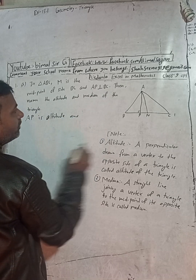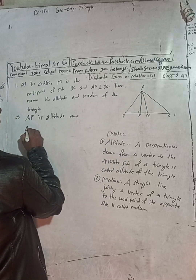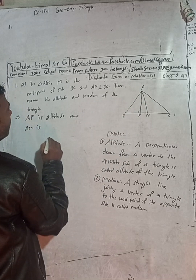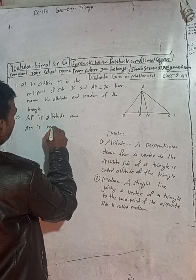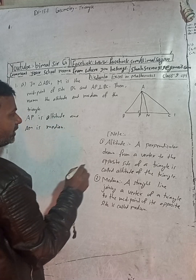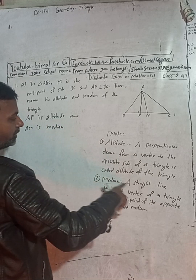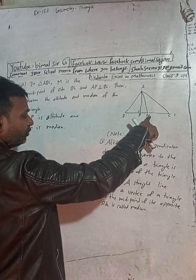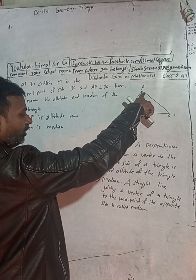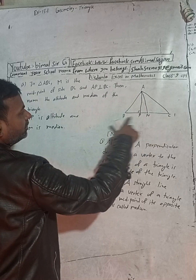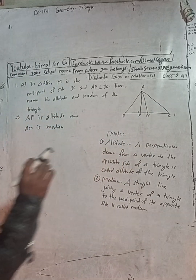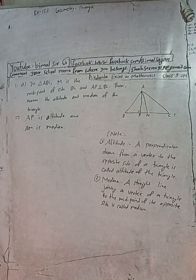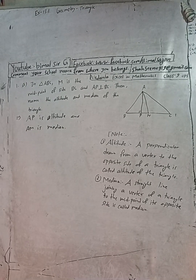And the median of the triangle — AM is the median. Why is AM the median? Because by definition, a straight line joining a vertex of a triangle to the midpoint of its opposite side is called the median. Here, A is the vertex and M is the midpoint of the opposite side BC, meaning BM equals CM. So this is the solution.